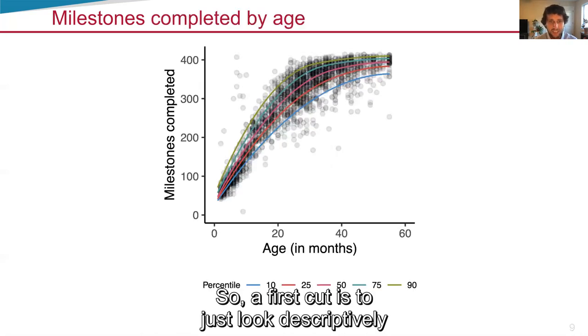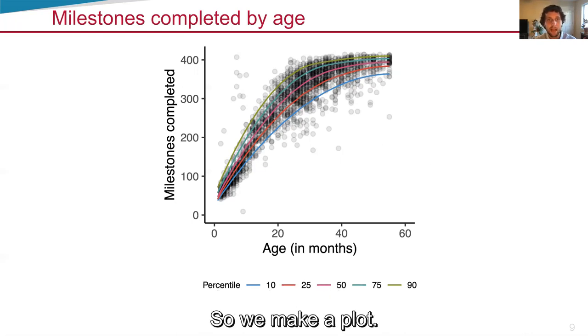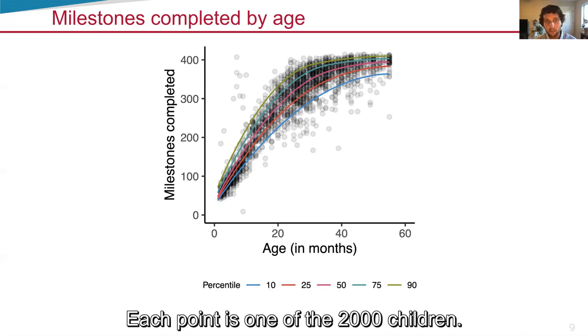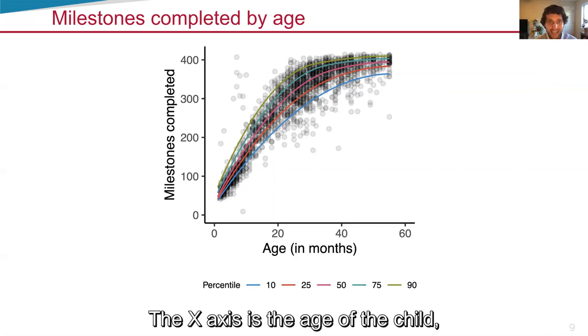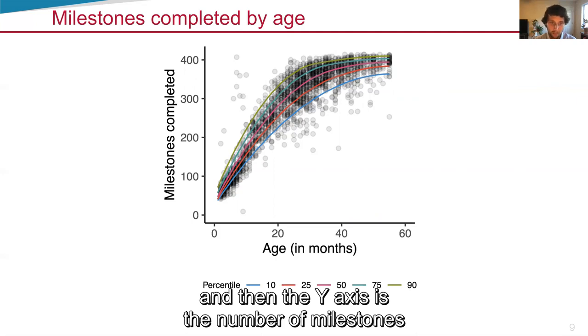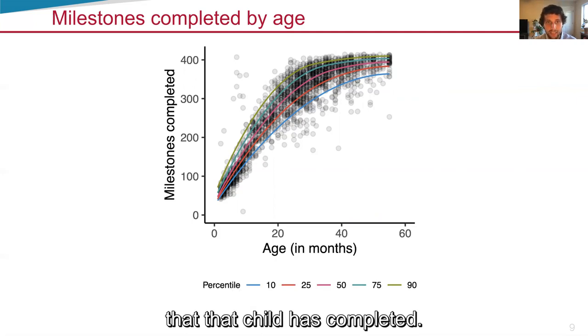A first cut is to just look descriptively at this data. So we make a plot. Each point is one of the 2,000 children. The x-axis is the age of the child. And then the y-axis is the number of milestones that that child has completed.